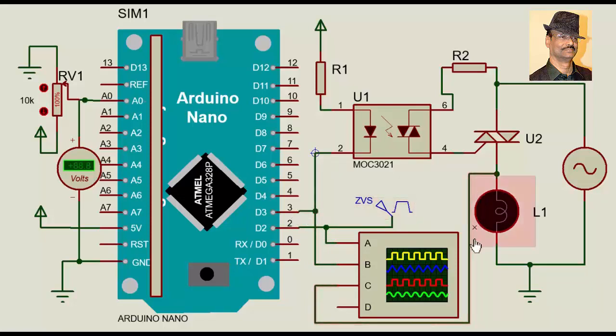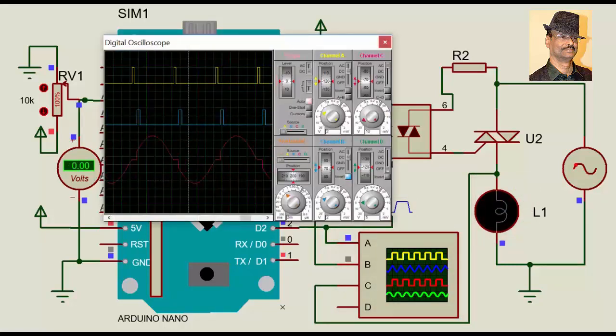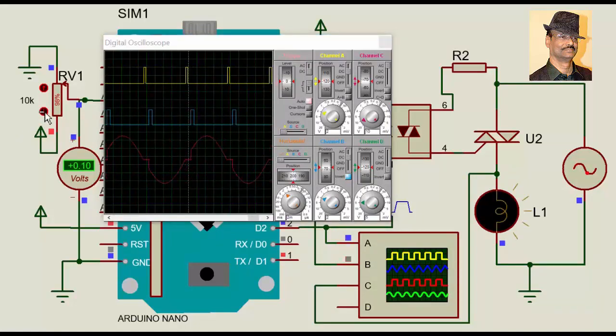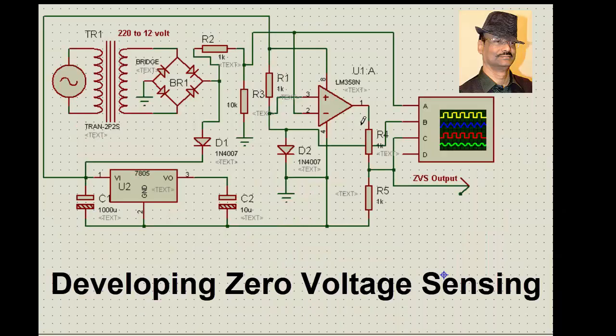And the output waveform is from here. So when we operate this, we find the full voltage, and then when we go on reducing this, you can see the waveform changing and you can see the lamp load on.